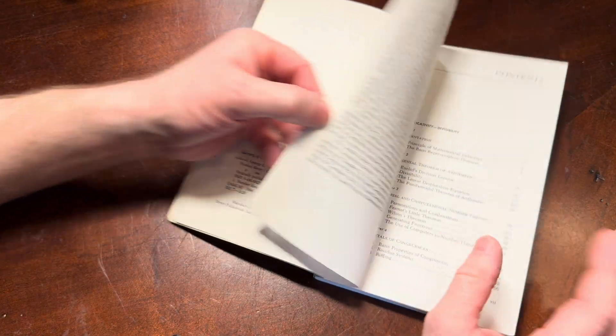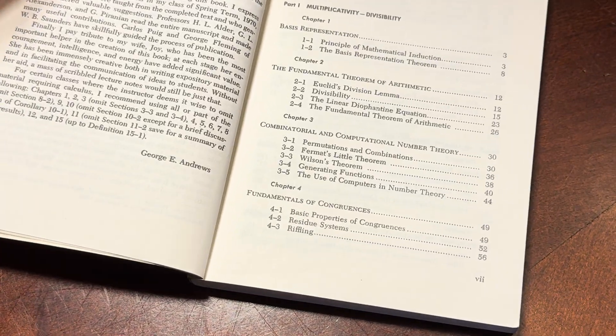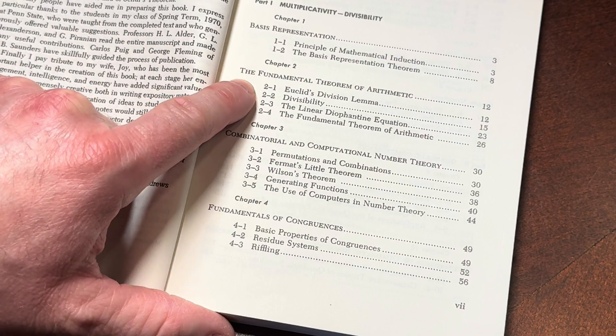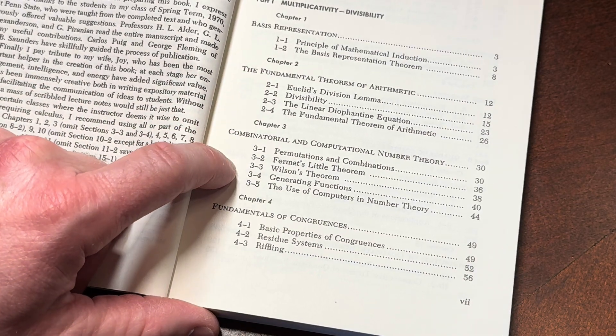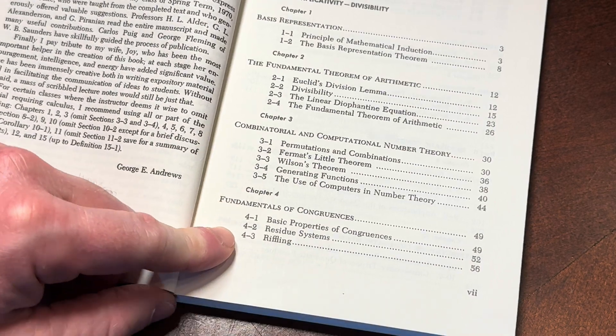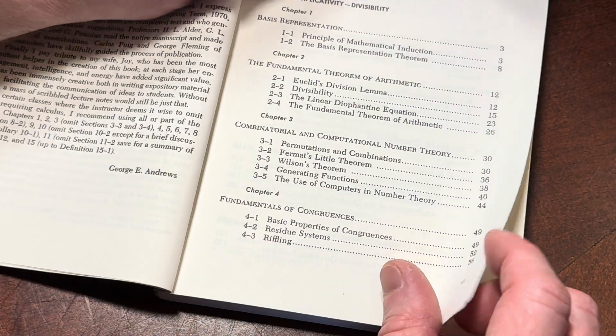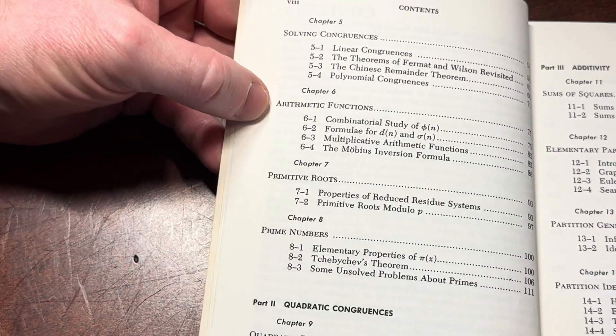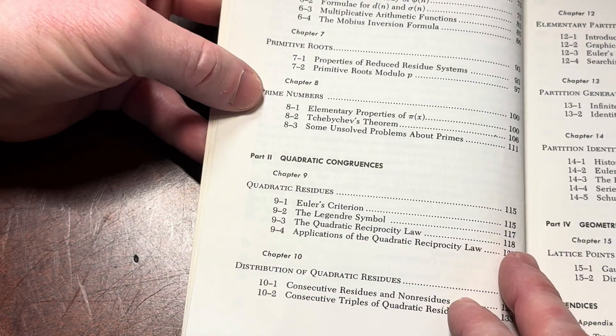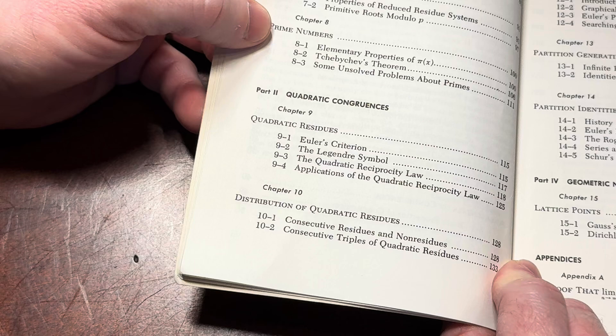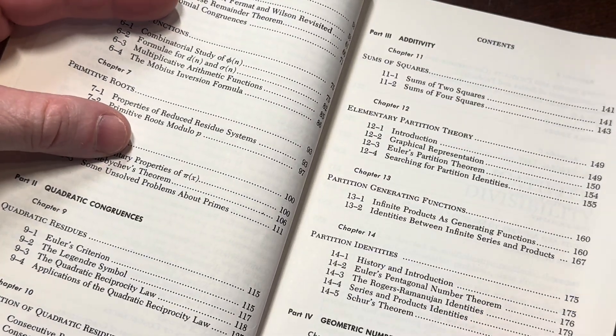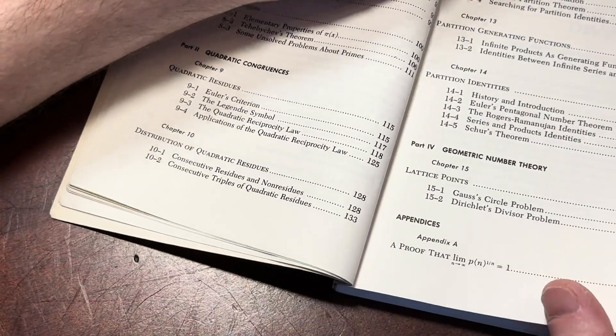Let's take a look at the contents. You can see what this covers, and you can use this to learn number theory. Basis representation, the fundamental theorem of arithmetic, combinatorial and computational number theory, fundamentals of congruences, solving congruences, arithmetic functions, primitive roots, prime numbers, quadratic congruences, additivity, geometric number theory, and then there is the rest.